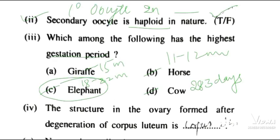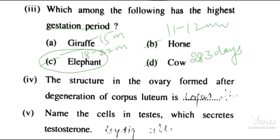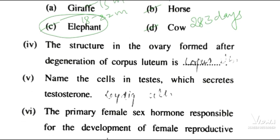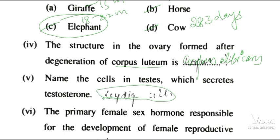The structure in the ovary formed after the degeneration of corpus luteum is called corpus albicans. Next, name the cells in the testes which secrete testosterone — that is the Leydig cells.